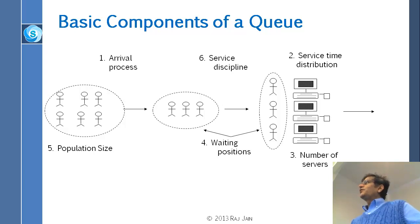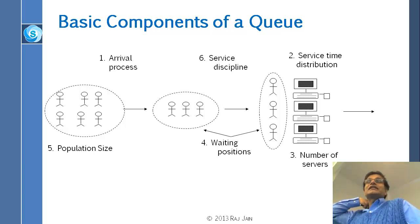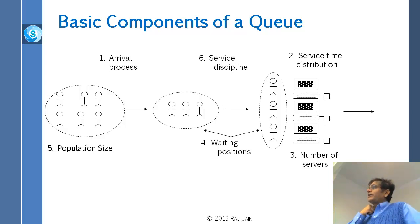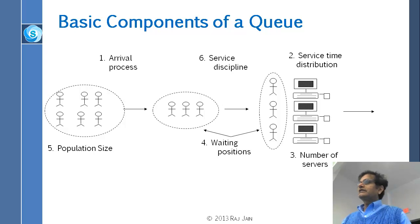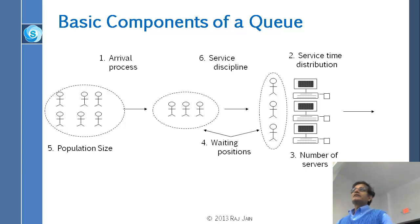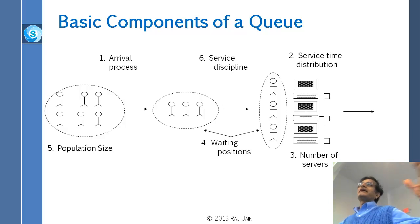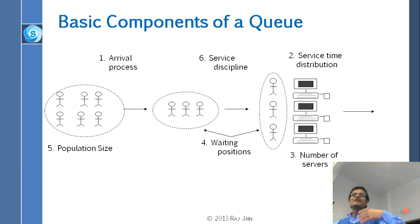The fifth thing is population size — people not in the queue who are outside, maybe in the parking lot or at home. Those are the potential customers. If the population size is very small, like for a knitting store, the queues might be small. On the other hand, for Best Buy or electronics, everybody is interested, so the queues might be larger. Population size affects queue behavior.